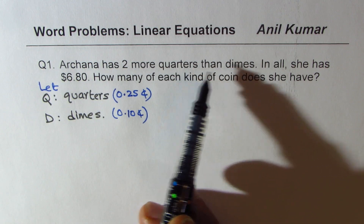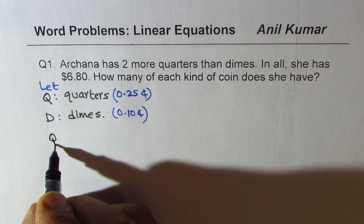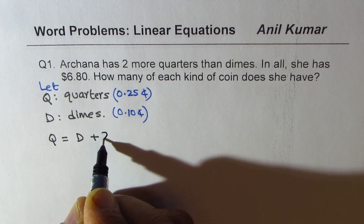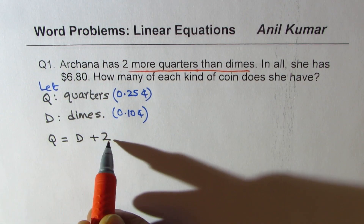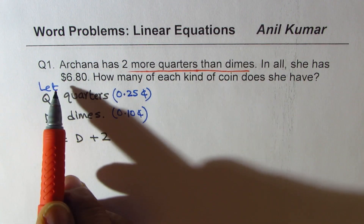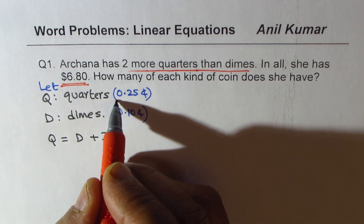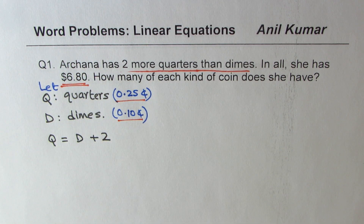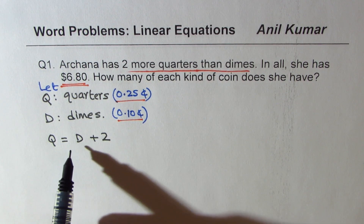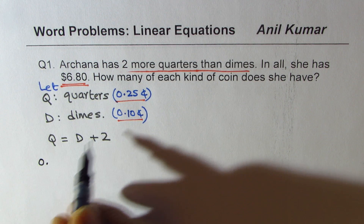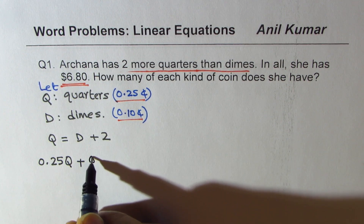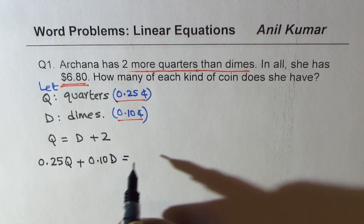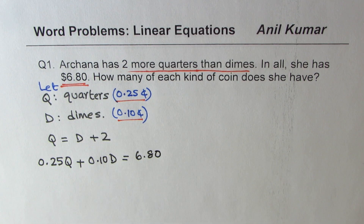Arjuna has two more quarters than dimes, so quarters equals dimes plus two. In all she has a value of $6.80. Value means we use: 25 cents for each quarter, plus 10 cents for each dime, equals 6 dollars and 80 cents. That is how we get our relation — so we have related them.